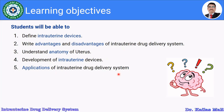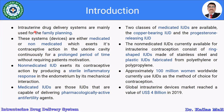Intrauterine drug delivery systems are mainly used for family planning. These devices are either medicated or non-medicated, and they exert their contraceptive action in the uterine cavity continuously for a prolonged period of time without requiring patient motivation. They are placed into the uterine cavity and elicit their action for a prolonged period, say from one year to ten years.